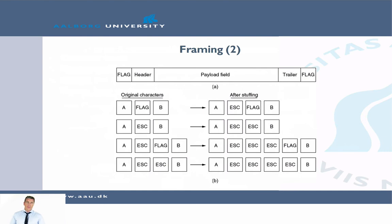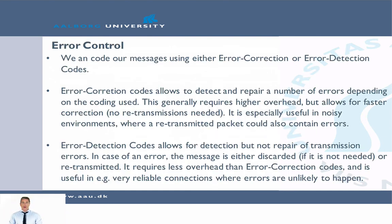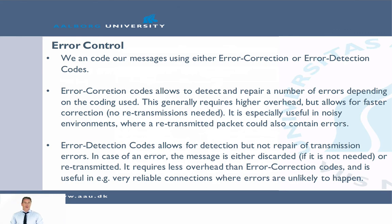Next, we look at error control. We can code our messages with either error correction or error detection codes. Error correction codes allow us to detect and repair a number of errors, with how many depending on the coding scheme used. In general, the more errors we want to detect and correct, the higher the overhead. Error correction also has higher overhead than error detection because we need to send more data along with our frames to perform corrections.